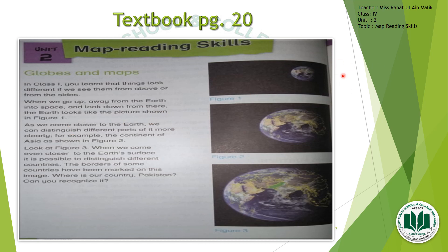As we come closer to Earth, we can distinguish different parts more clearly — water bodies or dry land, for example the continent of Asia as shown in figure 2. In figure 3, when we come even closer to Earth's surface, it is possible to distinguish different countries, and the borders of some countries have been marked on this image.